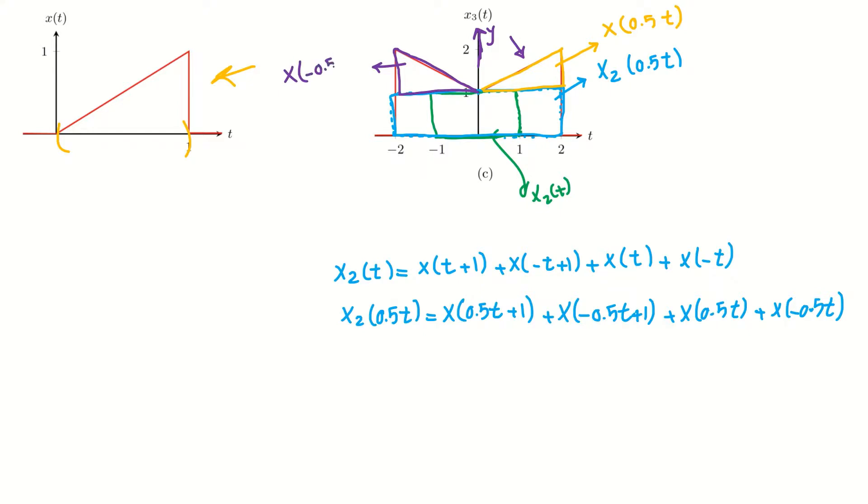Okay, so we have X(t). This X(t) has three parts. This blue one is part 1, and the purple one is part 2, and the purple one is part 3. Okay, so I can write X3 here. So X3(t) equals part 1, which is X2 of 0.5t, plus part 2, which is X of...